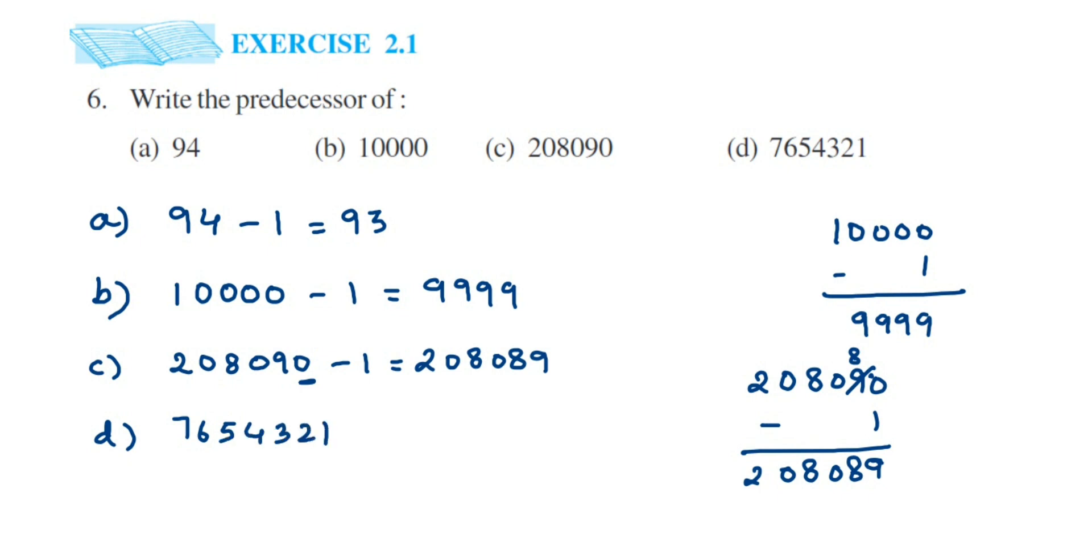Then the last one: we have 7654321. We have to find the predecessor, so subtract 1: 7654320. That's it. I hope this question is clear - how to find the predecessor. In case you have any doubts, you can drop a comment. Thank you so much for watching.